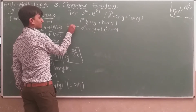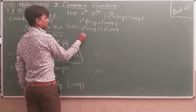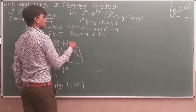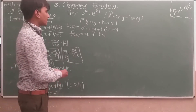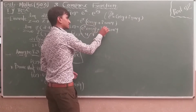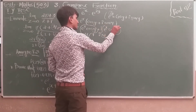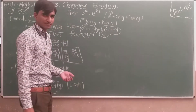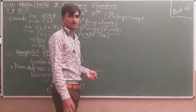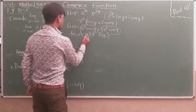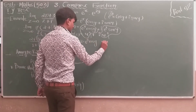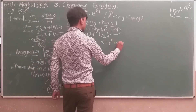Since f(z) = u + iv, comparing both sides, the real part is u = e^x cos y and the imaginary part is v = e^x sin y.